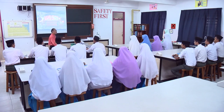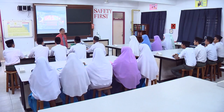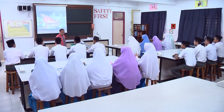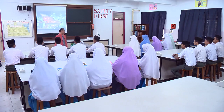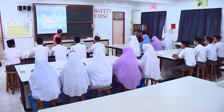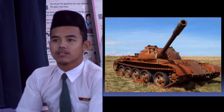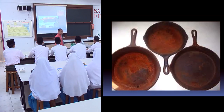Rusting has occurred on this car. So, besides the car and the tin I showed, rusting can actually occur on all objects made of iron — for example, like this ship, an armored vehicle, a wok, and also the zinc roof on a house.